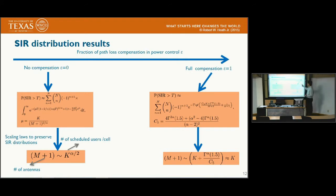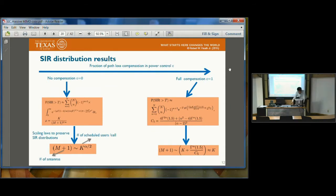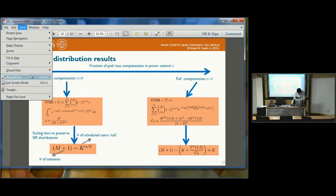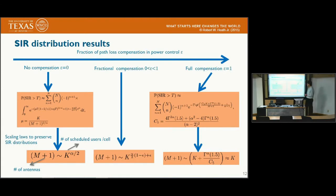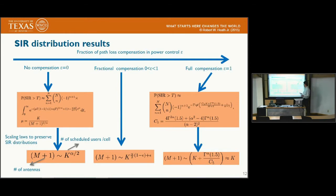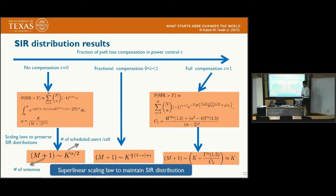For the other extreme case with full power control — epsilon = 1 — we can show that M needs to scale linearly with K to maintain the SINR distribution. For general fractional power control (general epsilon), we also have an expression to compute the SINR distribution, and we show that M should scale with K to an exponent to maintain the SINR distribution. The exponent is always greater than 1 unless epsilon = 1, which is the full power control case. So in general, to maintain the same SINR distribution in a massive MIMO network, we need a superlinear scaling law between M and K with fractional power control.